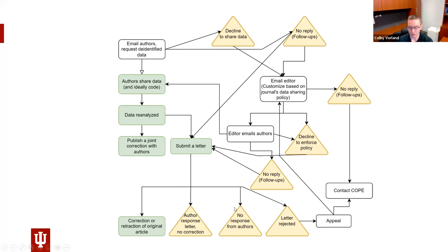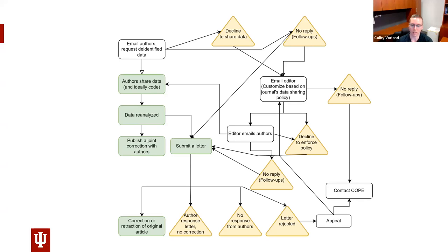Another outcome may be no response from the authors at all — our letter gets published but that's it. Or sometimes our letter just gets rejected for various reasons, and then we spend a lot of time appealing to editors-in-chief, or we contact the Committee on Publication Ethics (COPE) if we think proper procedures are not being followed. Over the years we've developed language that seems to be effective at getting the attention of editors — appealing that these are invalidating errors that need correction, not just typical differences of opinion.